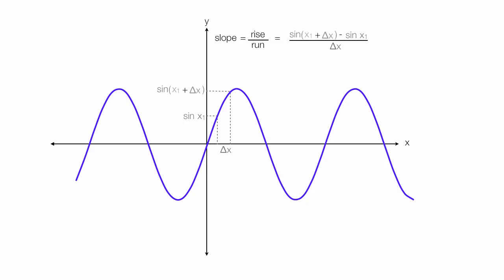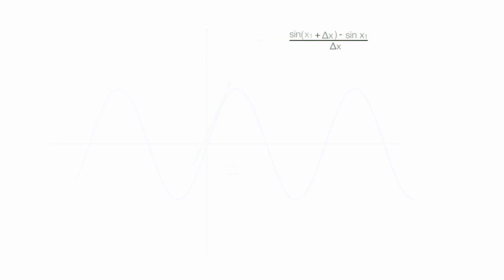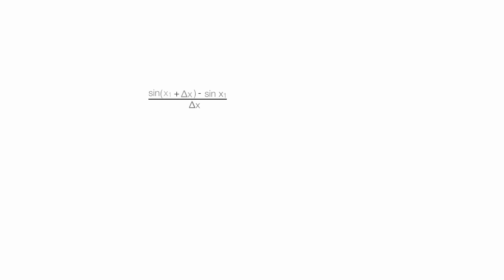Now if I let delta x — the change in x — go to zero, so that difference gets smaller and smaller, I have a tangent line, and that's the slope of the tangent line. So now I'm going to take this function and simplify it — this is the same thing as taking the derivative of sine of x.